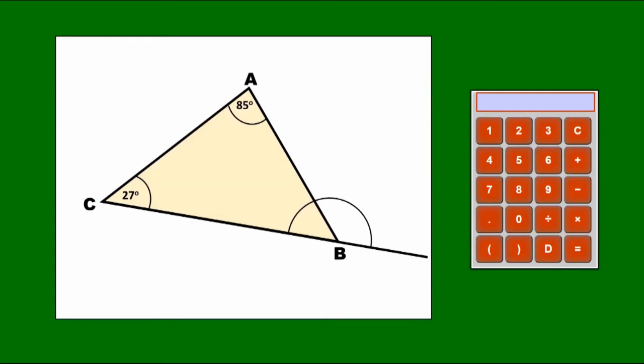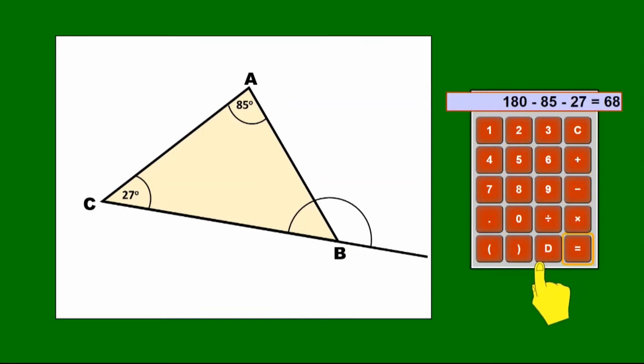So here we have triangle ABC and the side CB has been extended to produce an exterior angle at B. So one way of doing this would be to first find the interior angle at B by subtracting the 85 and the 27 from 180 to get 68. So the 68 is the interior angle at B.